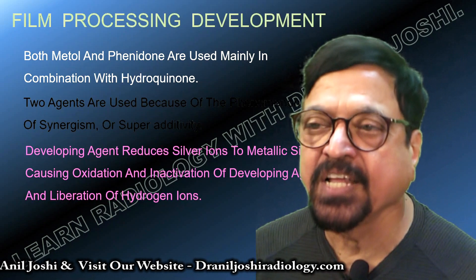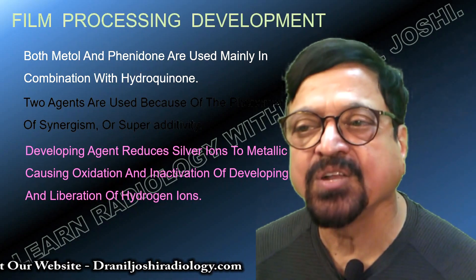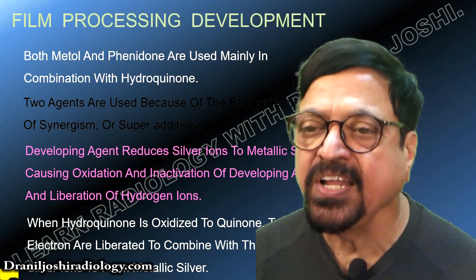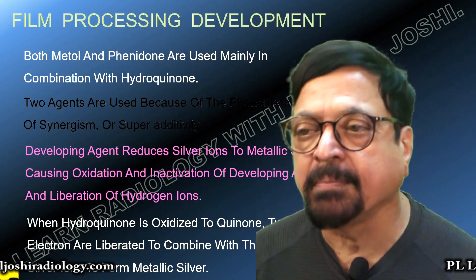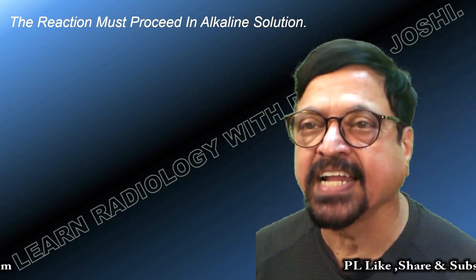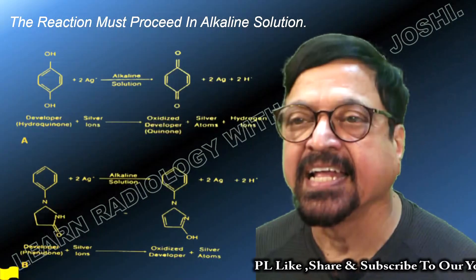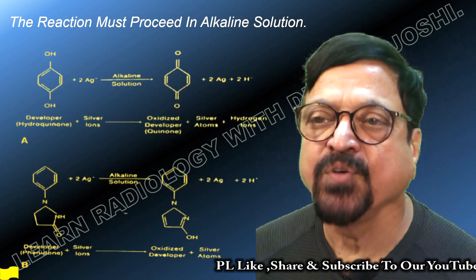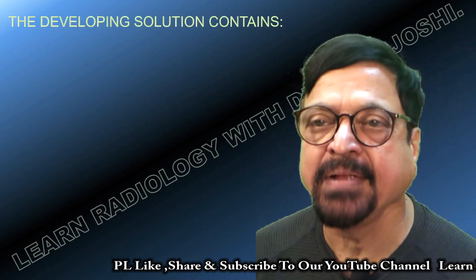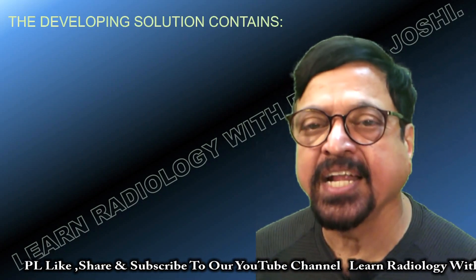The developing agent reduces silver ions to metallic silver, causing oxidation and inactivation of the developing agent and liberation of hydrogen ions. When hydroquinone is oxidized to quinone, two electrons are liberated to combine with two silver ions to form metallic silver — that is how ionic silver gets converted into metallic silver. The reaction must proceed in alkaline media. The important thing is it is done in alkaline media; it is a chemical process and it must take its own time to complete with adequate pH.